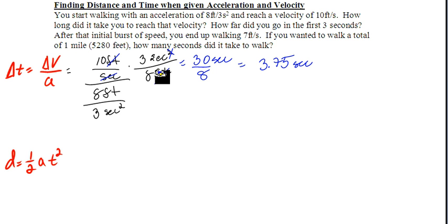So it took me 3.75 seconds to reach that velocity of 10 feet per second. Then it asked me, how far did you go in those first three seconds? So I'm looking for a distance now. My distance is equal to 1/2 the acceleration, which is 8 feet per 3 seconds squared.